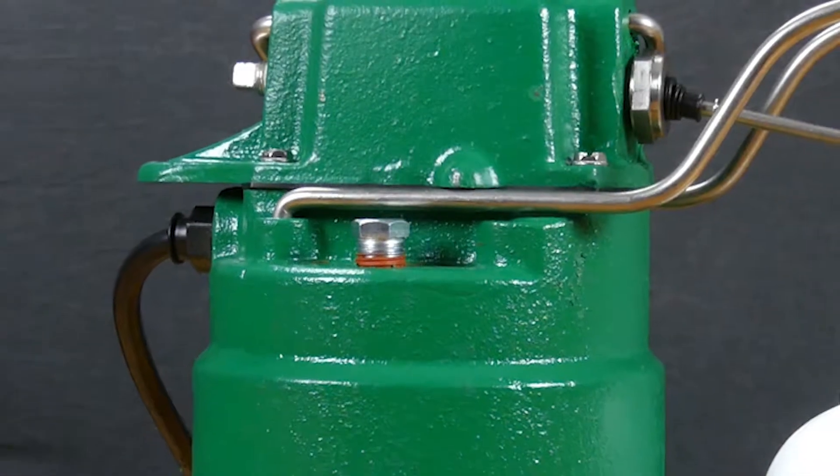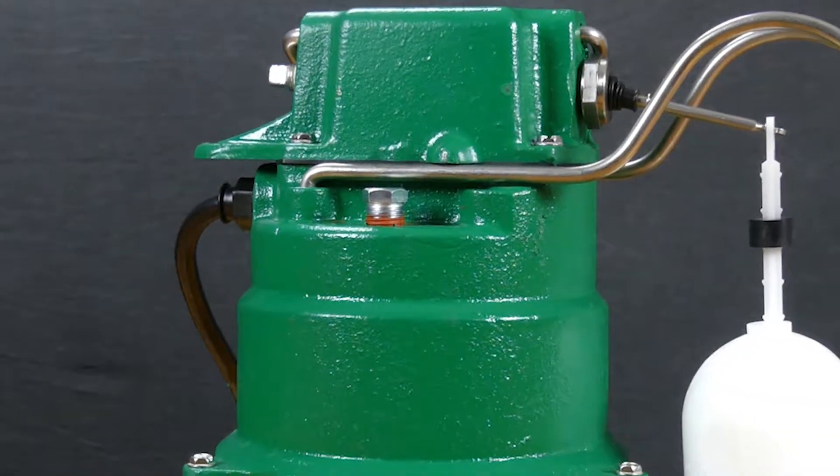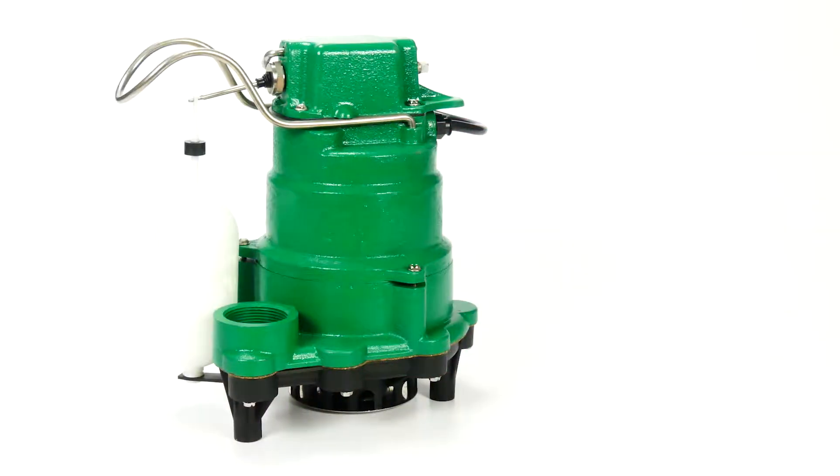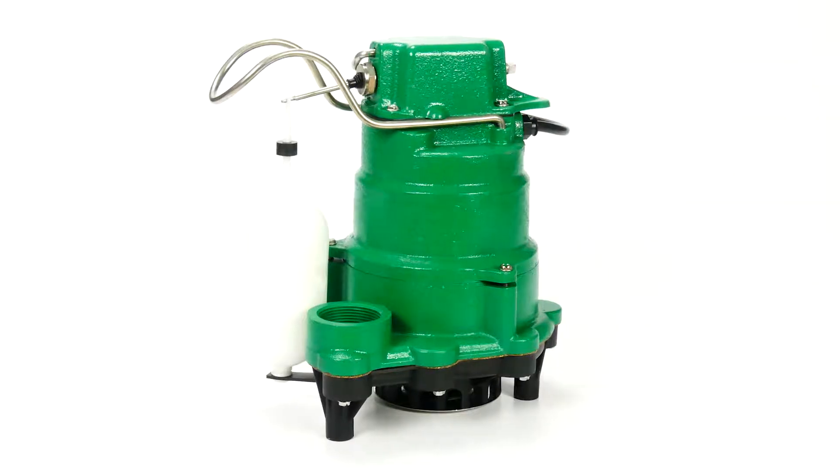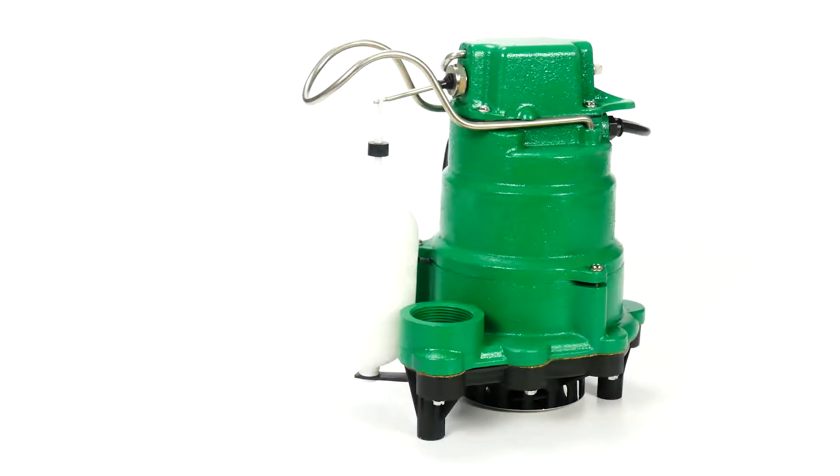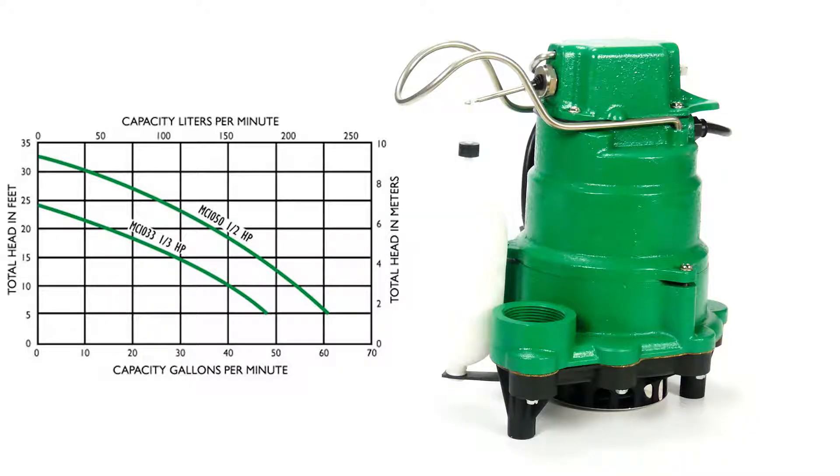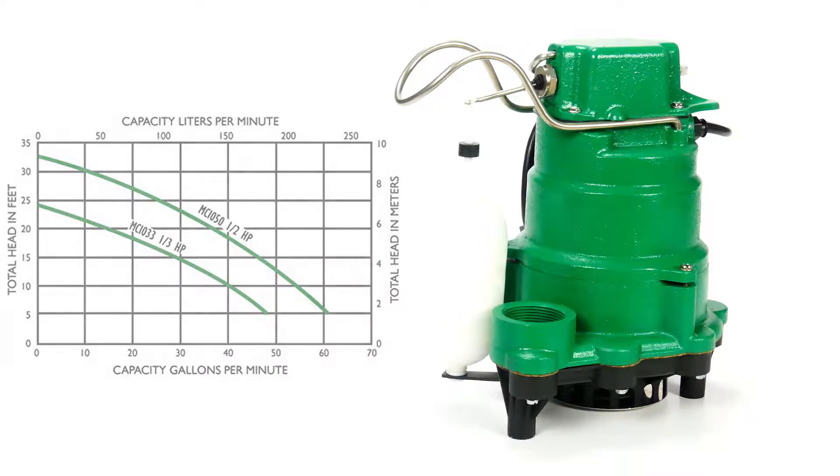The MCI series come equipped with a plug on top of the motor housing for easy draining and filling of the dielectric oil. The pumps in this series are capable of producing a maximum flow of about 48 to 60 gallons per minute, respectively, and a shutoff head of 24 to 32 feet, roughly, depending on the horsepower selected.